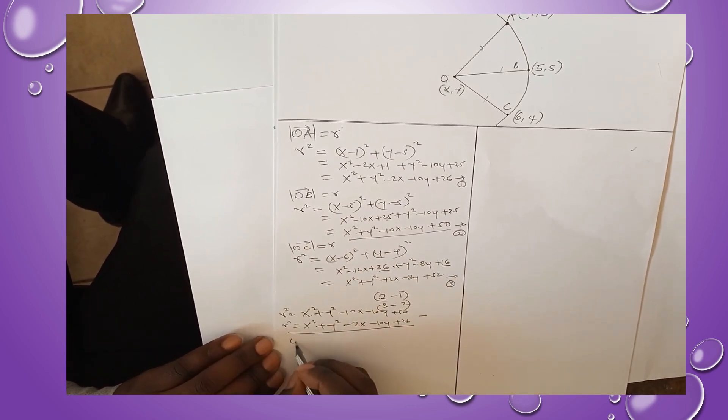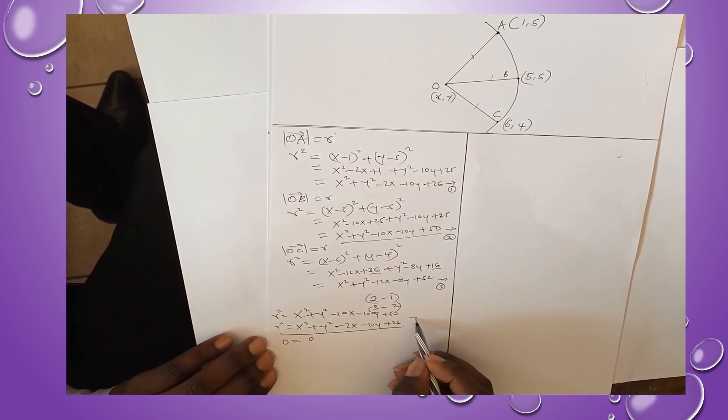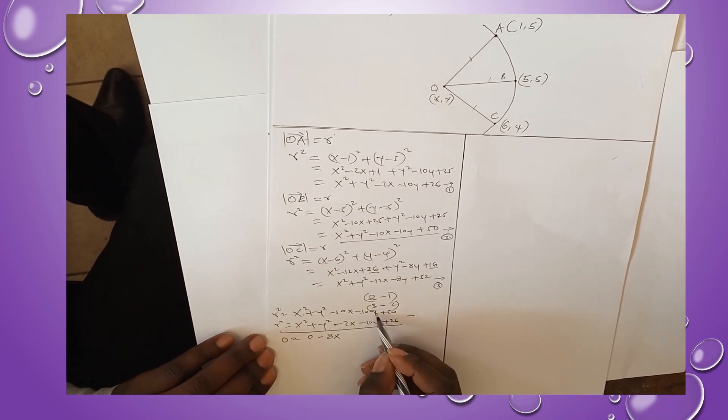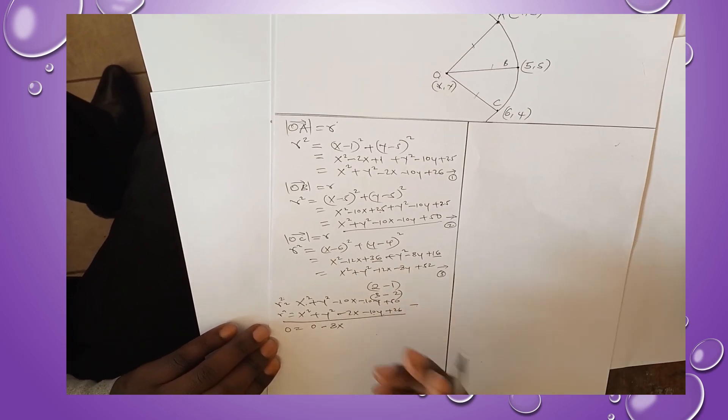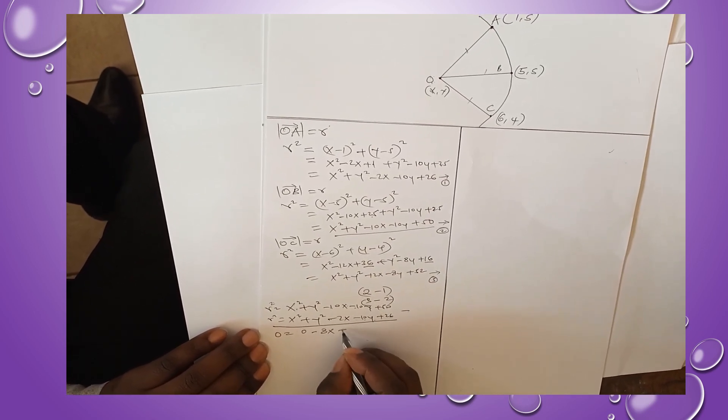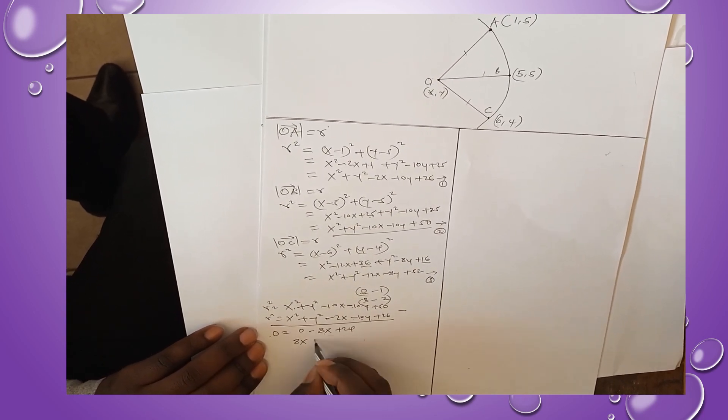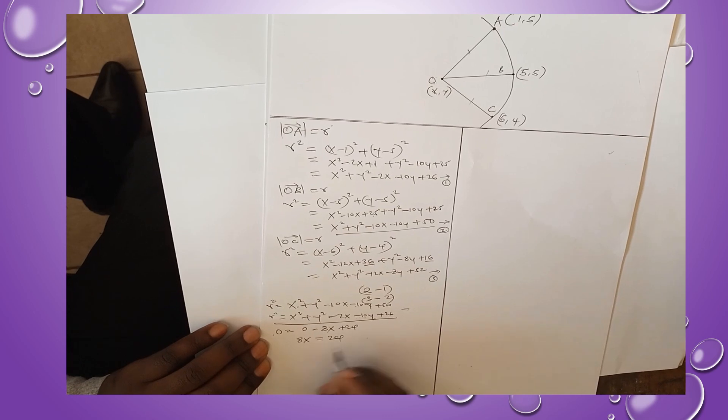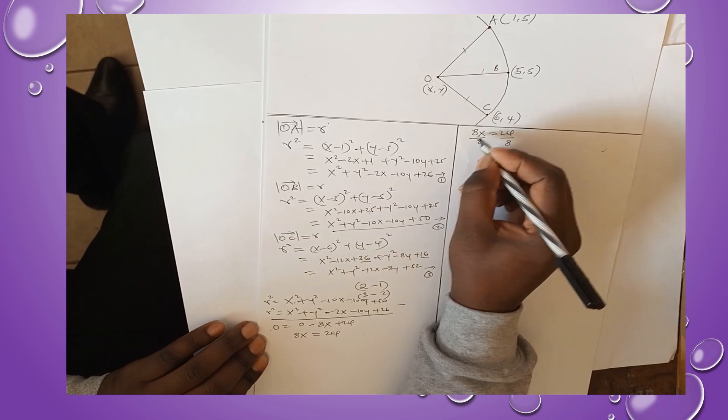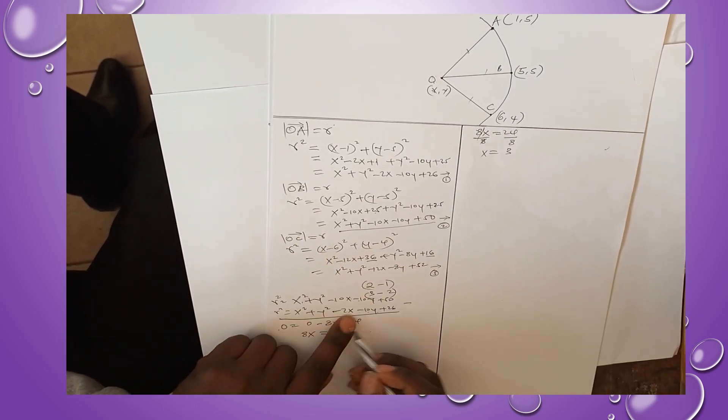When we subtract, we will get 0 = -8x + 24. If we take this -8 to the other side, it would be 8x = 24. We divide by 8, therefore our x becomes 3.